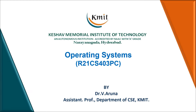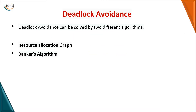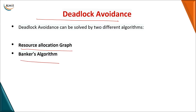In today's class on operating systems we will be moving on to the next topic which is deadlock avoidance. Previously we have seen deadlock prevention, where we eliminate any one of the necessary conditions so that deadlock will not occur. Now we will go for the second strategy: avoiding the deadlock. For deadlock avoidance we have two types of algorithms — resource allocation graph and banker's algorithm.